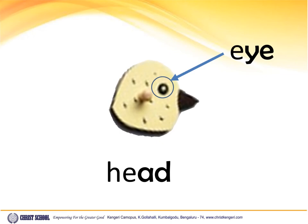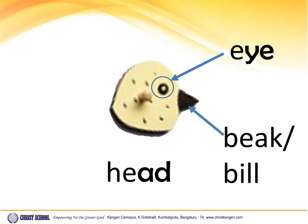Eye. The eyes of most birds are set on either side of the head. Usually the birds can see better to the right and left than straight ahead. Beak or Bill. The beak is used to catch or pick up food. The shape of the beak depends on the kind of food eaten. The bird has no lips or teeth.